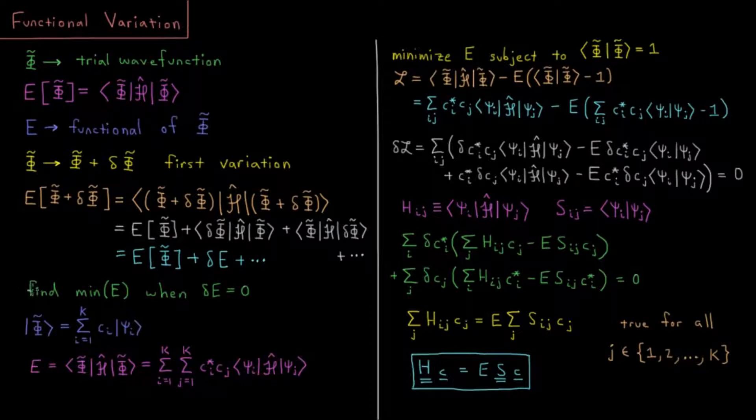Our task is to find the minimum energy, which is going to be found whenever the variation in the energy equals zero with respect to the variations in the wave function.